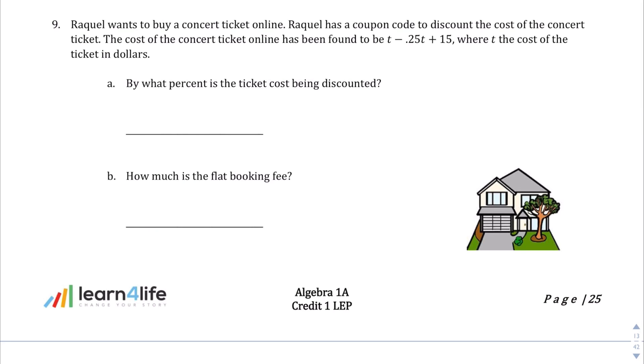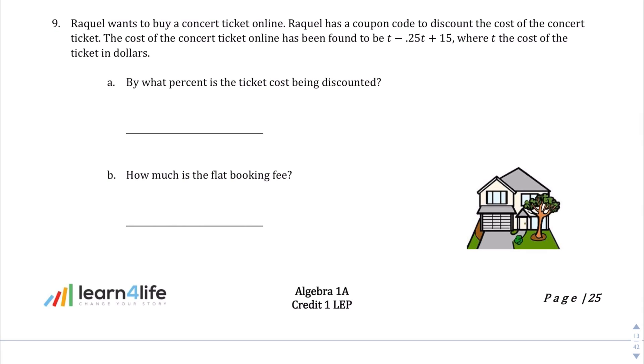Question number 9. Raquel wants to buy a concert ticket online. Raquel has a coupon code to discount the cost of the concert ticket. The cost of the concert ticket online has been found to be T minus 0.25T plus 15, where T is the cost of the ticket in dollars. By what percent is the ticket cost being discounted? Well, we should have noticed from the previous set of questions that this is a discount. This is minus 0.25T, so it's being discounted 25%. 0.25 as a decimal is 25%. How much is the flat booking fee? So when you don't buy any tickets, which is 0, that'll reveal the flat booking fee. And so if we plug 0 into this equation here, 0 minus 0.25 times 0, all that cancels out, and all you're left with is 15, and that's our flat booking fee. $15 is our flat booking fee.